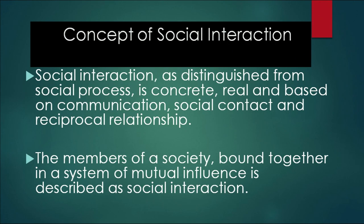Now we can discuss what social interaction is. Social interaction, as distinguished from social process, is concrete and based on communication, social contact, and reciprocal relationship. When you talk about a family as a social group, you find social contact and relationships between different family members. The members of a society bound together in a system of mutual influence is described as social interaction.